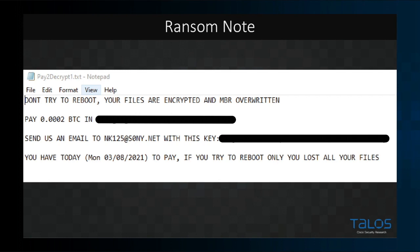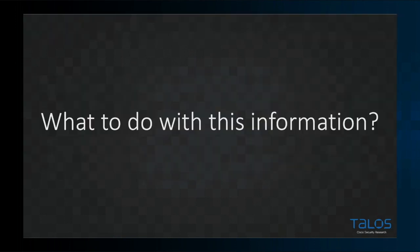Once the encryption process is complete, as is common with most ransomware, the victim is shown a ransom note and the files are no longer accessible. Now that we understand how this abuse works, when it's abused, and who's abusing it — what are we supposed to do with this information? Before I wrap up, I want to talk a bit about defense regarding what we've talked about so far, and give everyone some resources if you're interested in looking into this stuff at a deeper level.